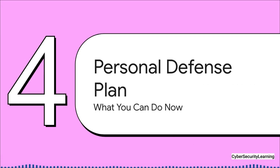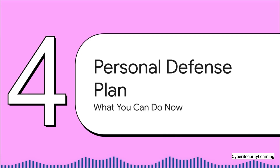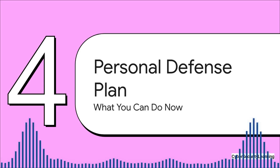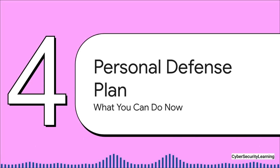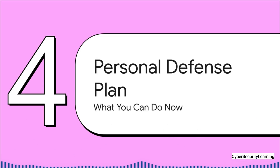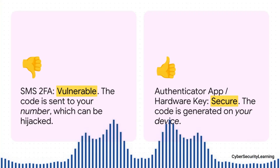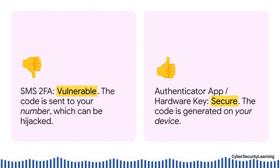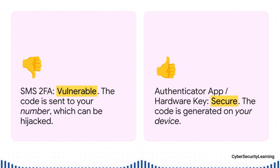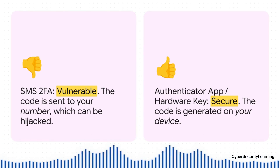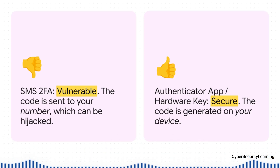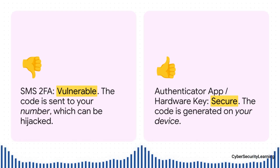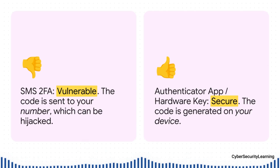Here's the good news: you are not helpless. There are very real, very effective things you can do right now to make yourself an incredibly tough target. The single most important thing to understand is that not all two-factor authentication is the same. When you get a code by SMS text, it's tied to your phone number — so if someone steals your number, they get the code. But an authenticator app like Google Authenticator or Authy generates that code on your physical phone. It never goes over the network, so a SIM swapper can't get it.